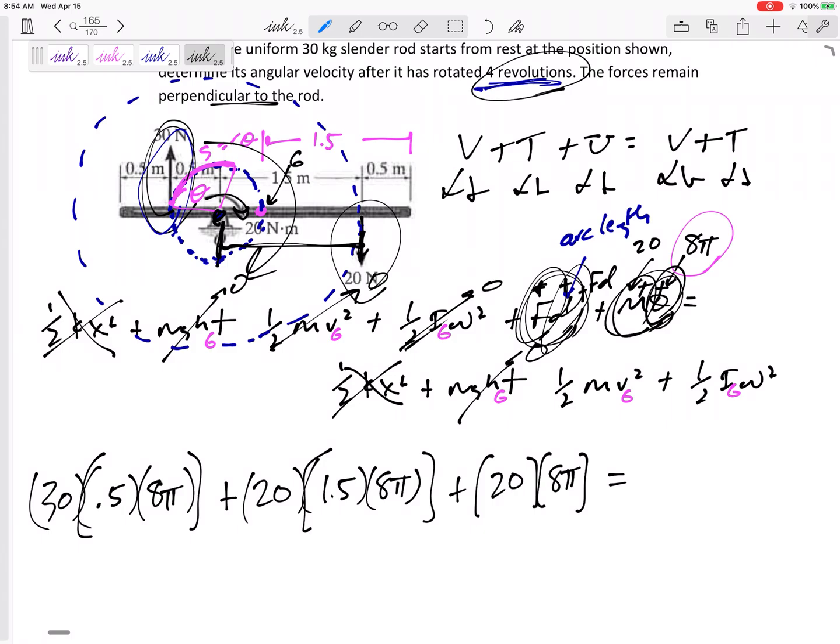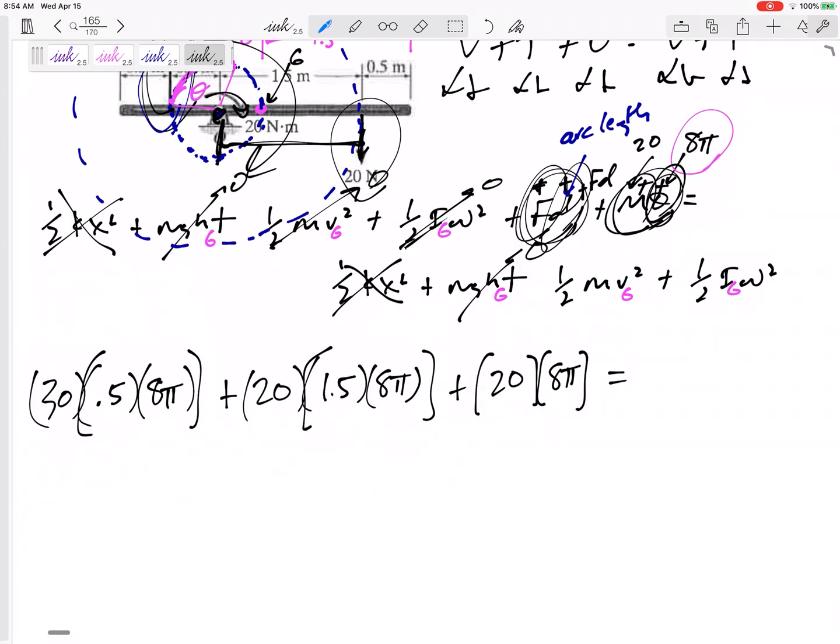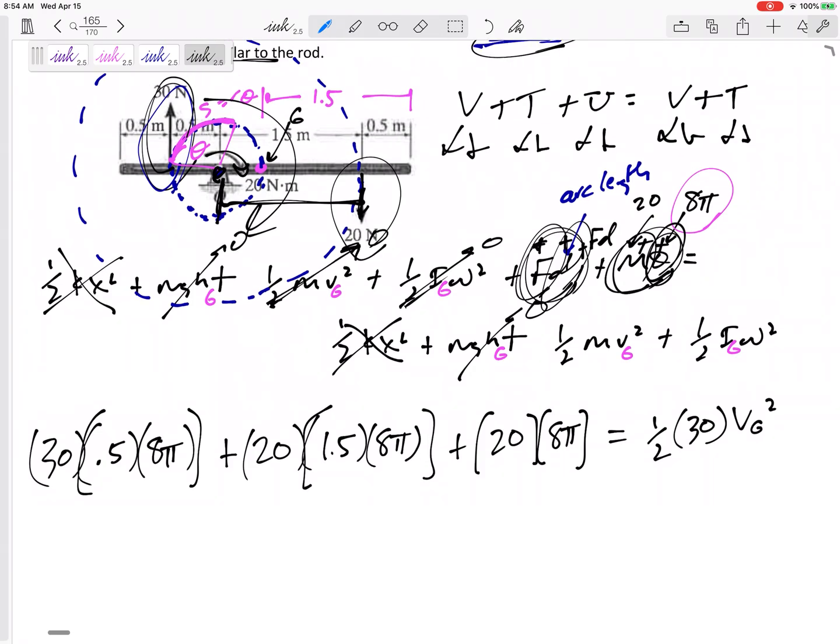That's what we have on the left hand side. On the right hand side we have one-half m, 30, vg squared. Now it started from rest, but point G, it's not pinned at point G, it's pinned at point O. This does have some velocity, probably going pointed straight down right there.